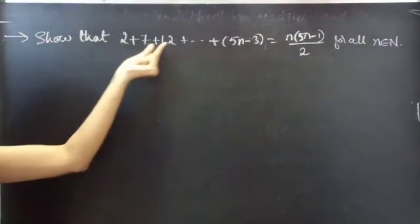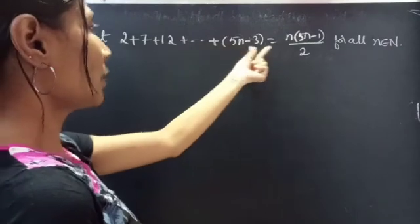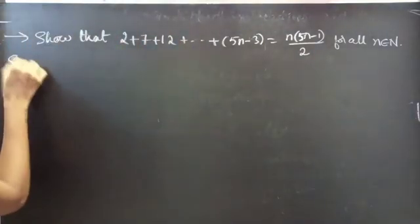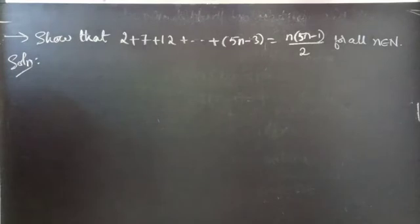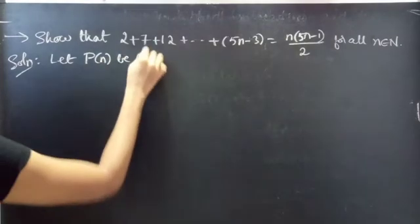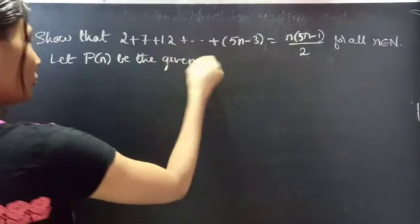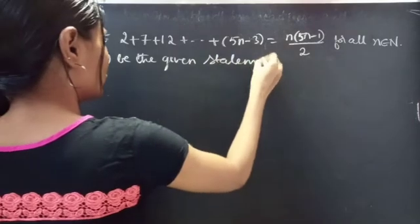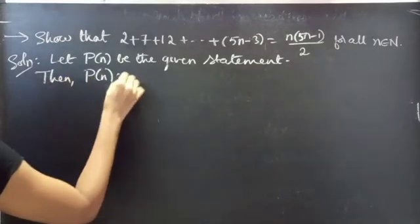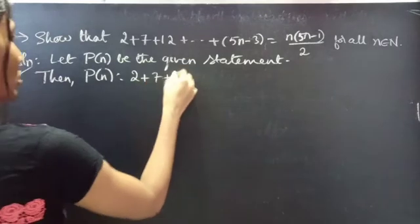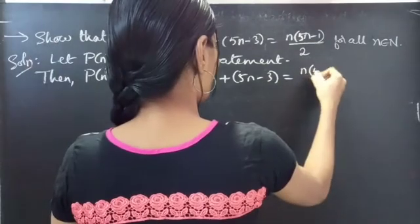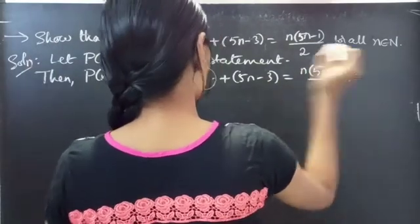Problem: Show that 2 plus 7 plus 12 plus ... plus (5n minus 3) equals n times (5n minus 1) by 2, for all n belonging to natural numbers. Solution: Here we are going to use the principle of mathematical induction. Let P(n) be the given statement, such that 2 plus 7 plus 12 plus ... plus (5n minus 3) equals n(5n minus 1) by 2.